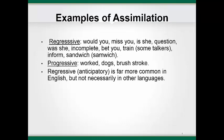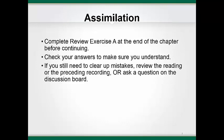Listen to the words as I say them: "would you," "miss you," "is she," "question," "was she," "incomplete," "bet you," "train" (at least for some talkers), "inform," and "sandwich." Here are some examples of progressive assimilation: "worked," "dogs," and "brushstroke." Pause the recording here and complete review exercise A at the end of the chapter. Make sure to check the answers in the back of the book to make sure you understand.